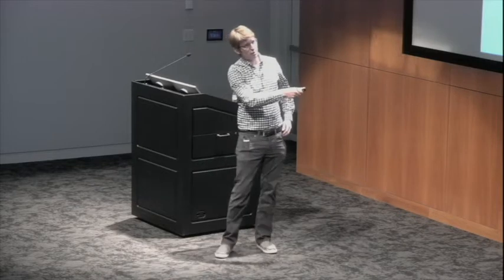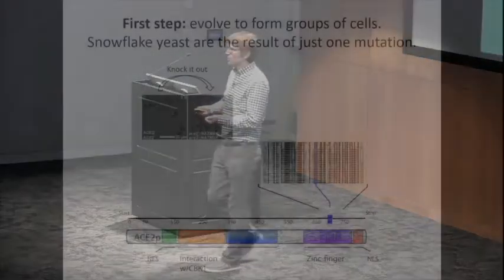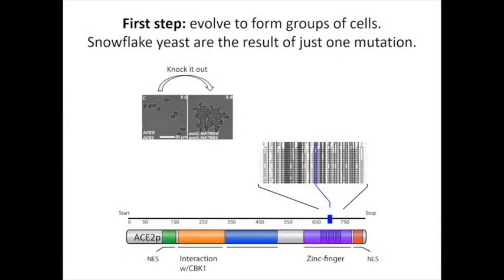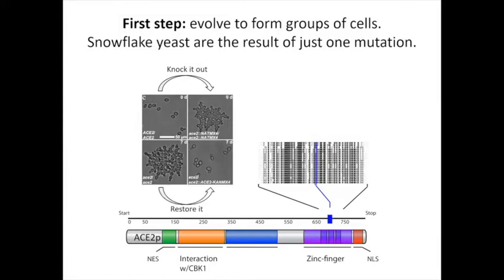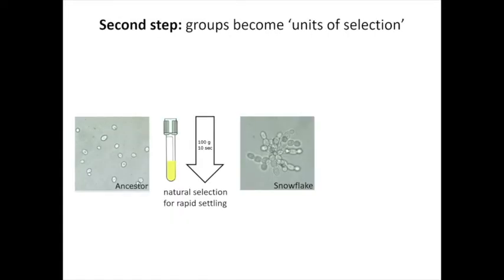The genetics underlying group formation in yeast are really simple. The way that it evolves most readily and most convergently is by losing function in a transcription factor called ACE2. This acts like a toggle switch. If you lose ACE2 functionality, daughter cells can no longer separate from mother cells and you get snowflakes. You can actually restore functional ACE2 into naturally evolved snowflakes and bring them back to unicells, which is nice. From an experimental perspective, it's nice to have a toggle switch so you can take something which has been evolving for a thousand generations, bring it back to unicellularity, and do experiments on the single-celled versions.